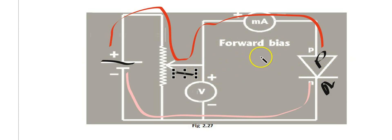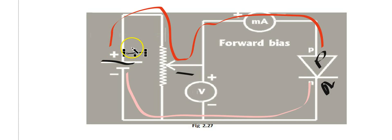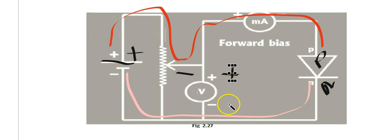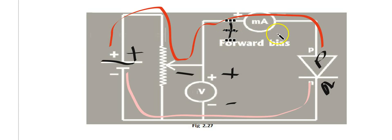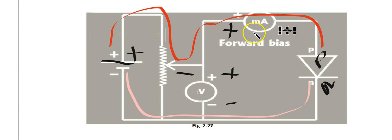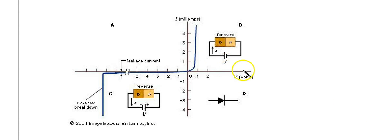We measure the voltage given to the P-N junction with the help of a voltmeter. It is important to note that the voltmeter positive should connect to the positive side and negative to the negative side. Similarly, the ammeter positive should connect where the battery positive is. The ammeter, or milliammeter, measures the current produced when voltage is applied to the P-N junction. This gives us the forward bias and forward current.